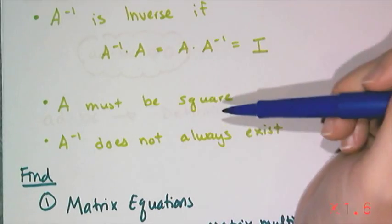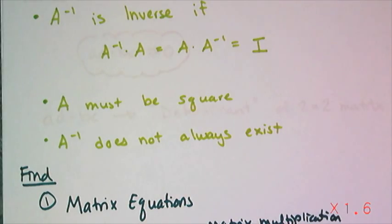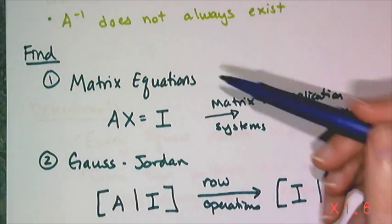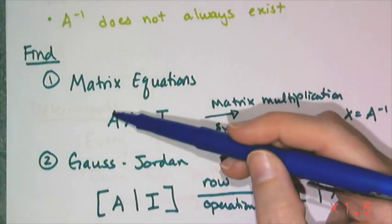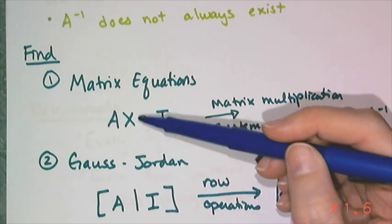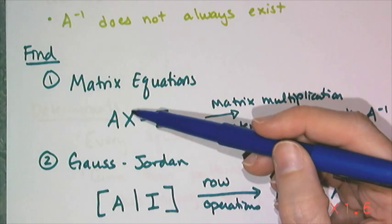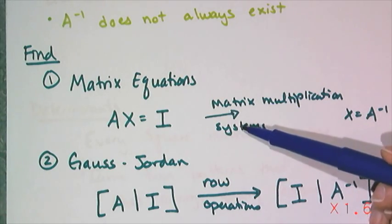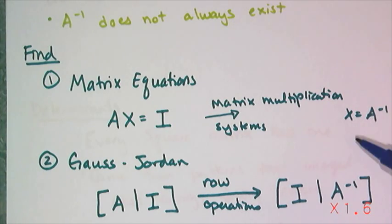We also know that the inverse doesn't always exist, which is where determinants are going to come into play. We know how to find the inverse using matrix equations, where A is our matrix that we want to invert, and X is a matrix filled with variables, and we use matrix multiplication and systems of equations to solve for X, which gives us the inverse.